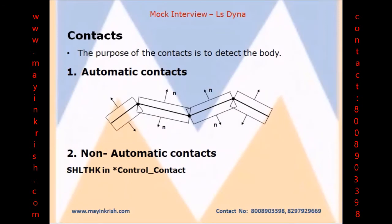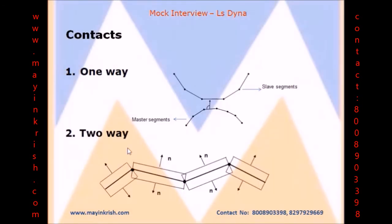Now we will discuss about one-way and two-way contacts. In one-way contact, the slave nodes are tested whether they are penetrated into master segment. One-way contact types allows for compression loads to be transferred between the slave node and the master segment.